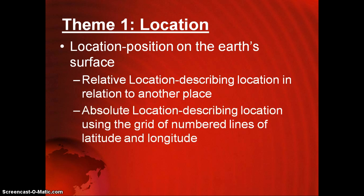Absolute location is describing location using grid-numbered lines of latitude and longitude. So if your friend told you she was going to Taiwan and gave you its coordinates — 24 degrees north, 123 degrees east — she is giving you its absolute location.